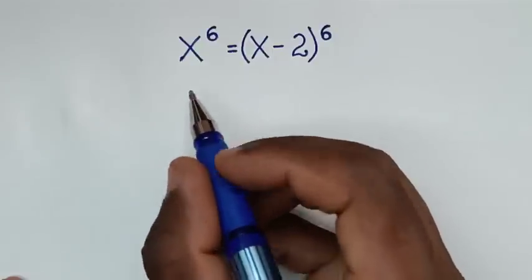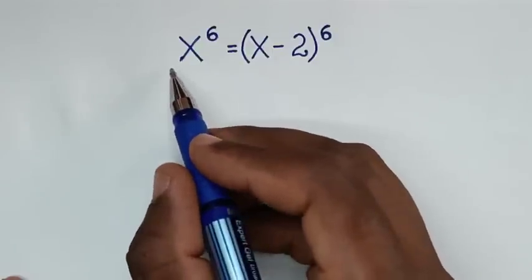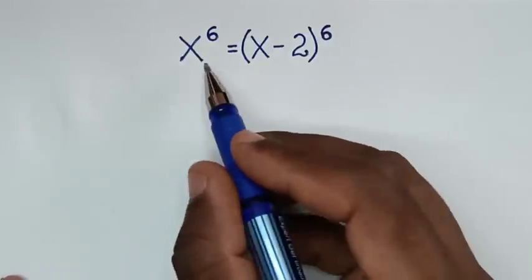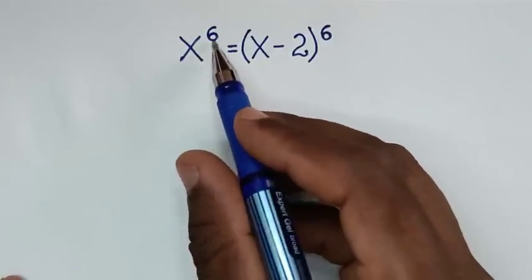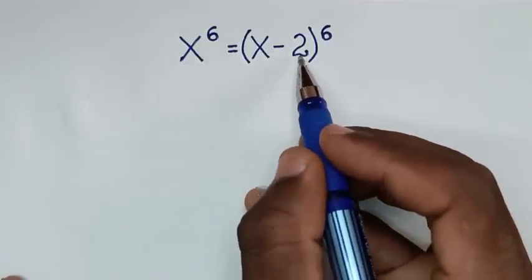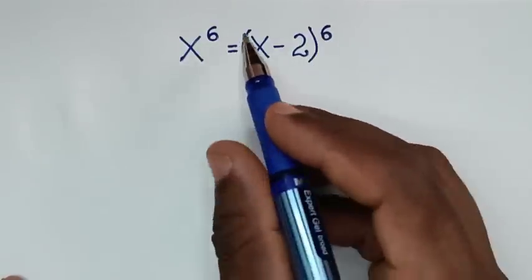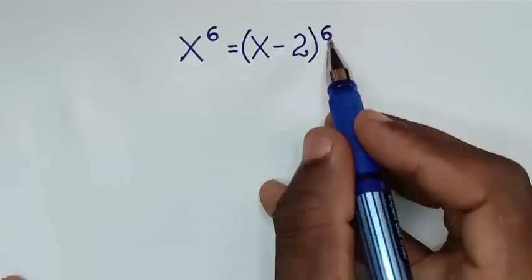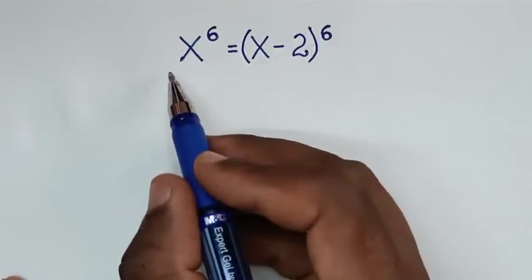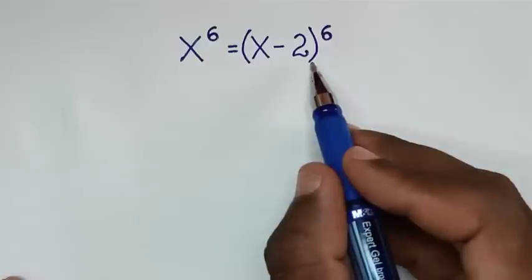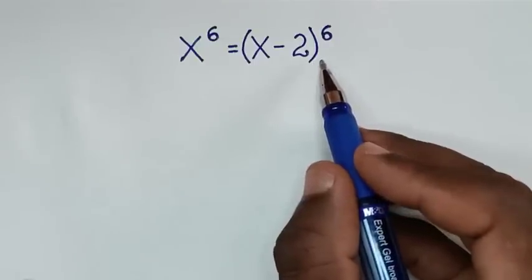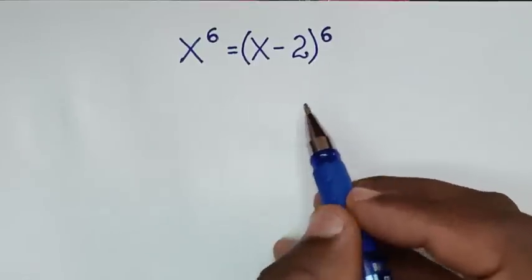Hello, you are welcome to solve this math problem which is x to the power of 6 is equal to x minus 2, bracket, to the power of 6. To find the values of x from this equation.